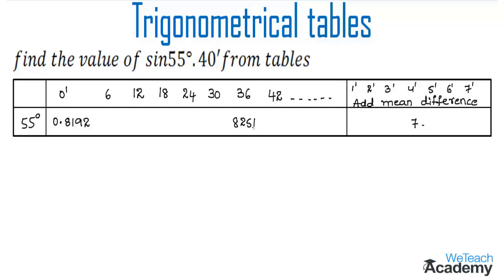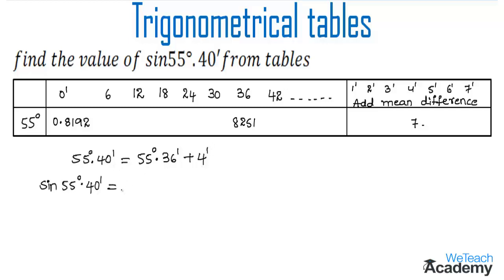Since we do not find the exact intersection, we use an approximation. The remaining minutes will be 4 minutes, and we will add the mean difference value for those 4 minutes. So sin 55 degrees 40 minutes equals the value at 55 degrees 36 minutes plus the mean difference for the remaining 4 minutes.